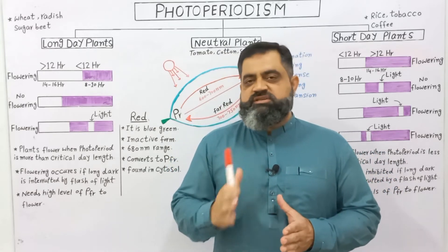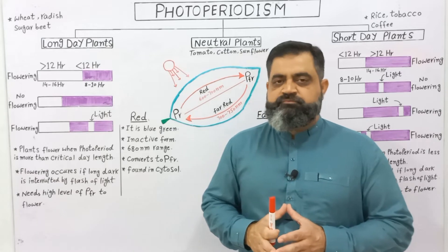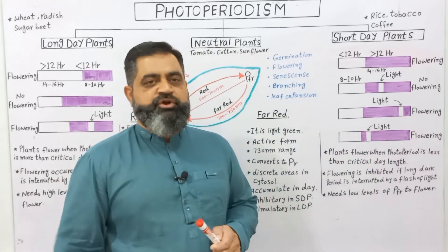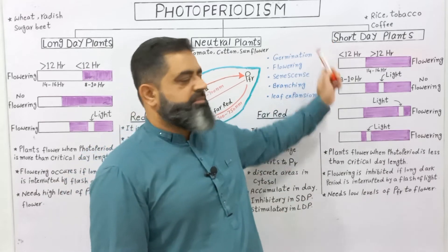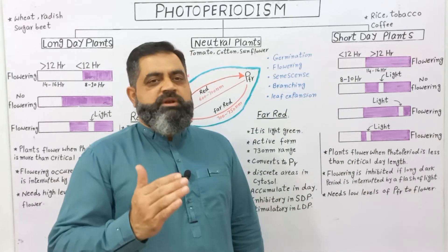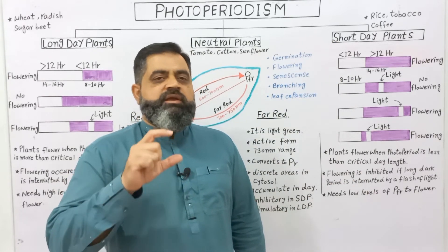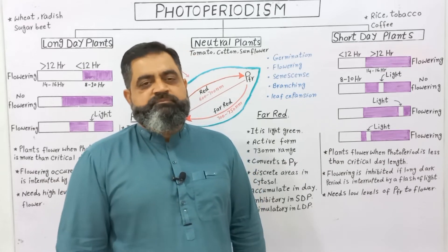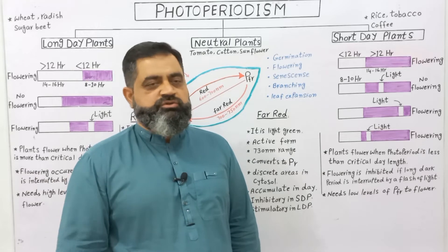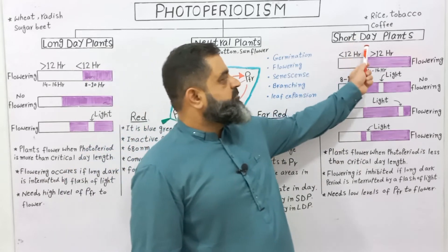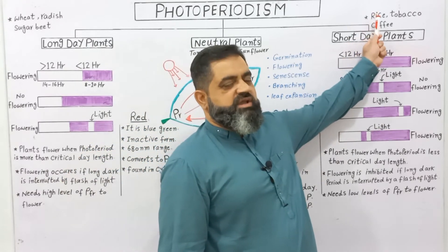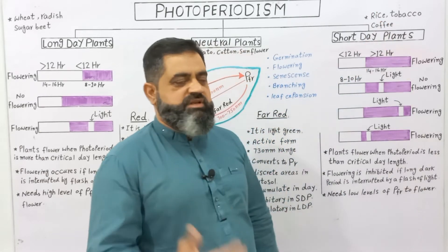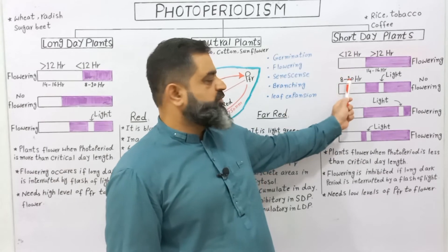Examples of long day plants are wheat, radish, and sugar beet. The second type of plants on the basis of photoperiodism are short day plants. Short day plants need less than 12 hours of photoperiod for flowering and growth.